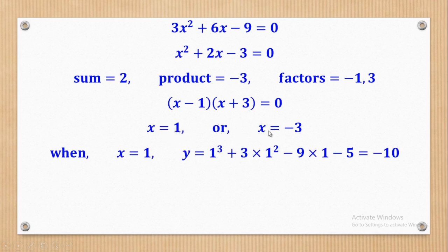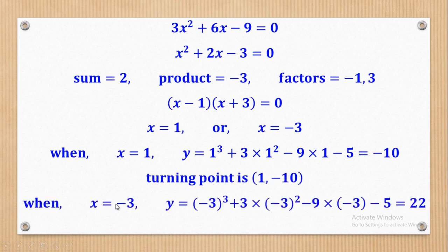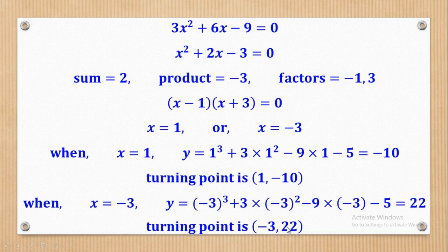Now that we have the values of x, we find the corresponding y values. When x = 1, substituting into the equation of y gives y = −10, so one turning point is (1, −10). When x = −3, substituting into the expression for y gives y = 22, so the other turning point is (−3, 22).